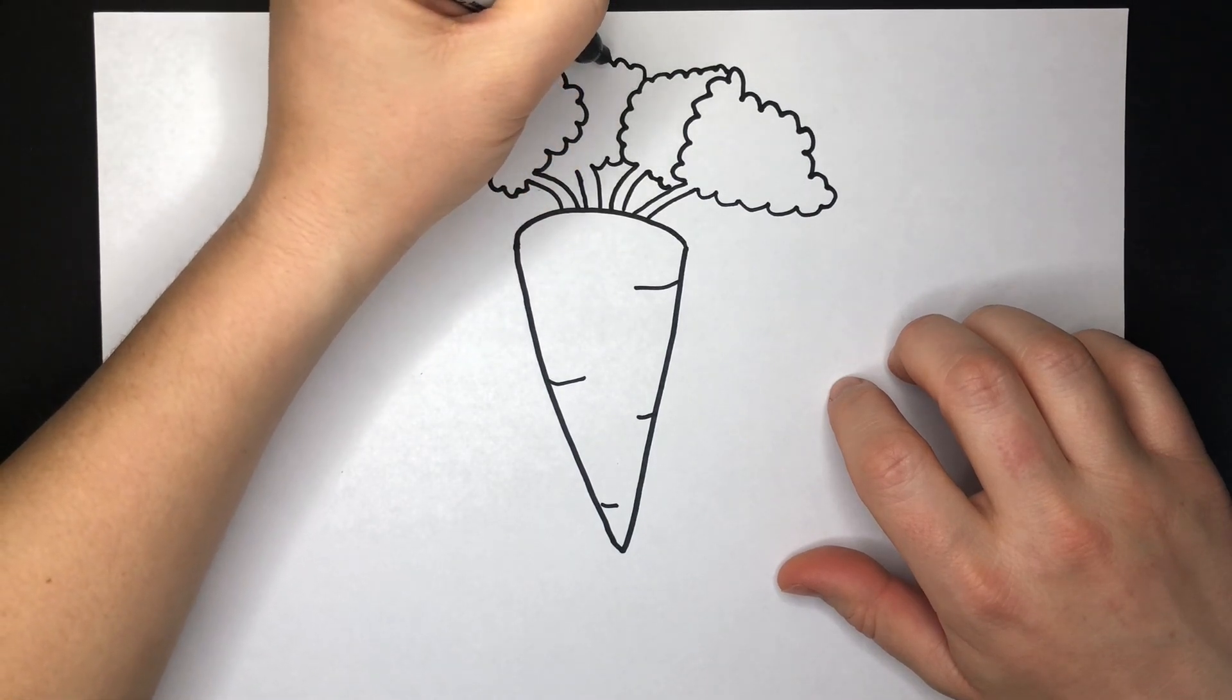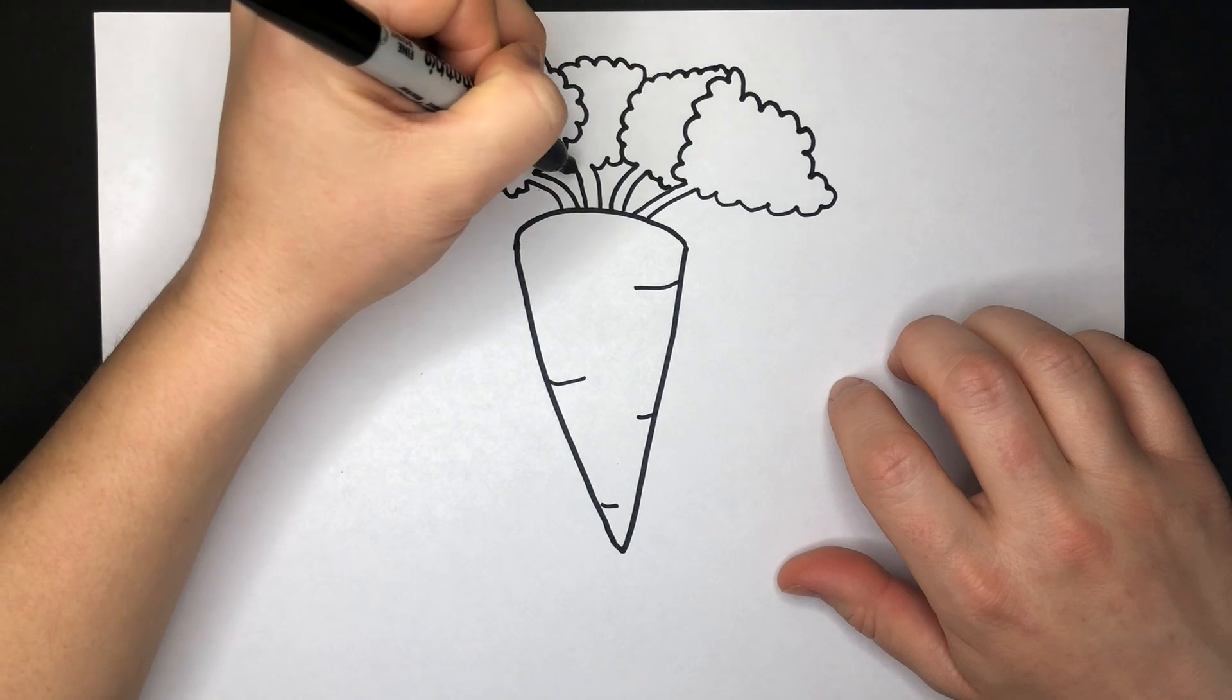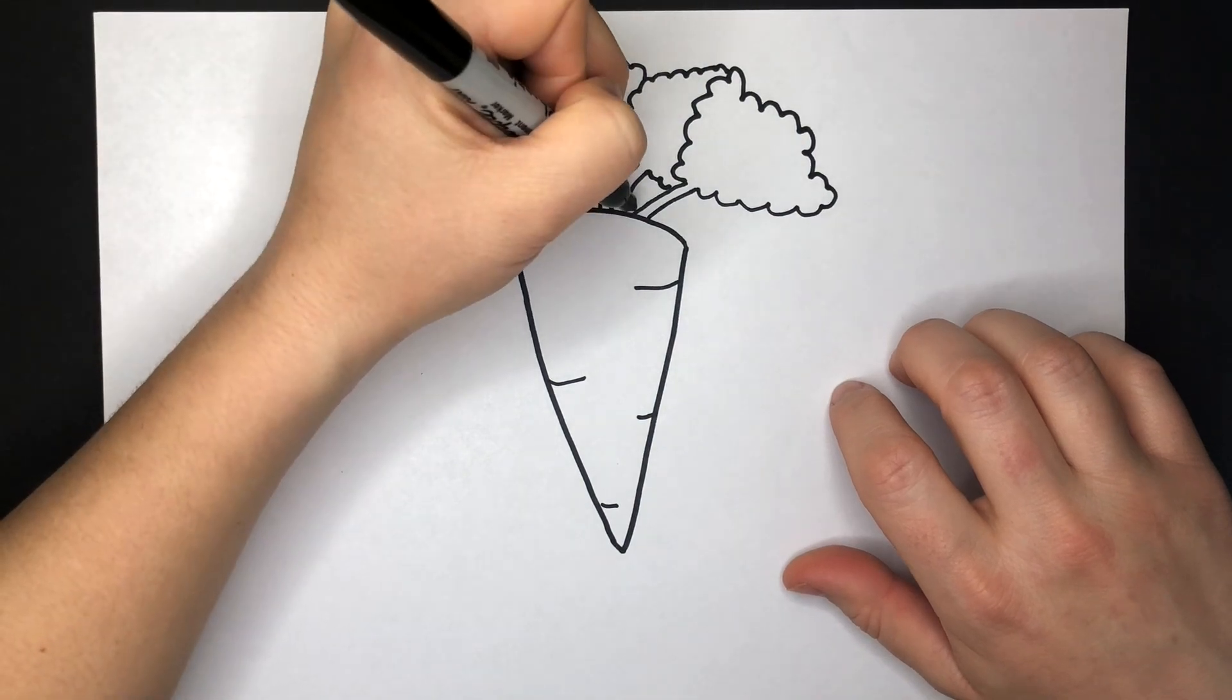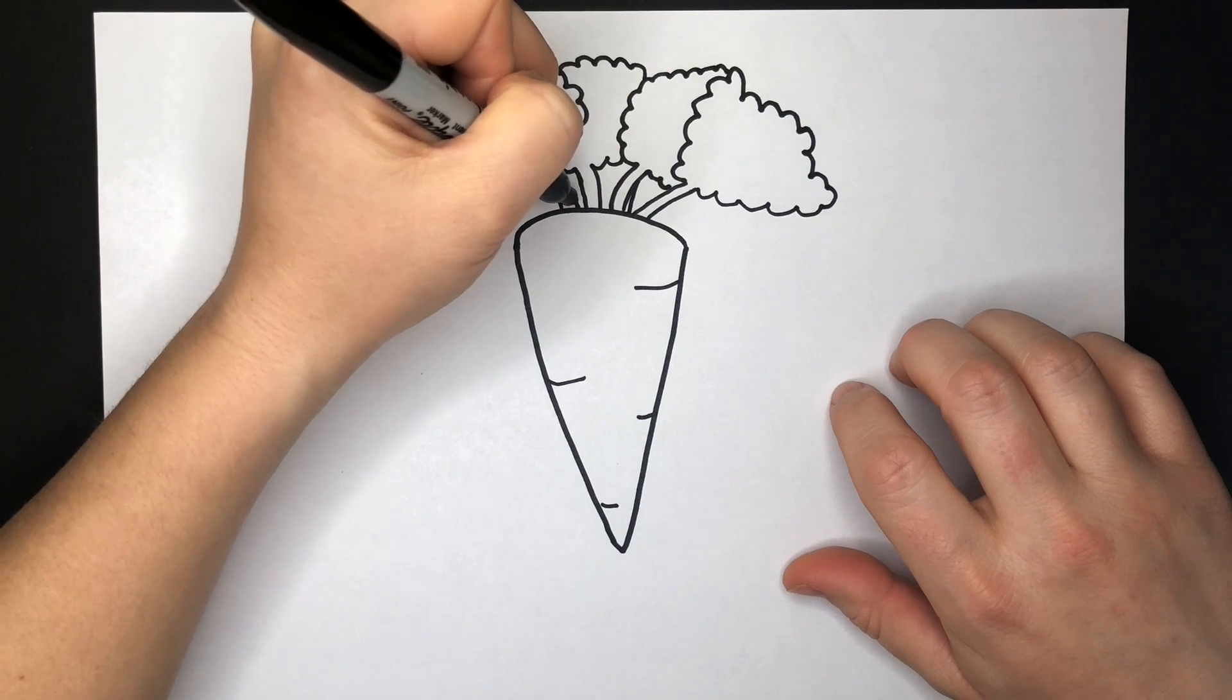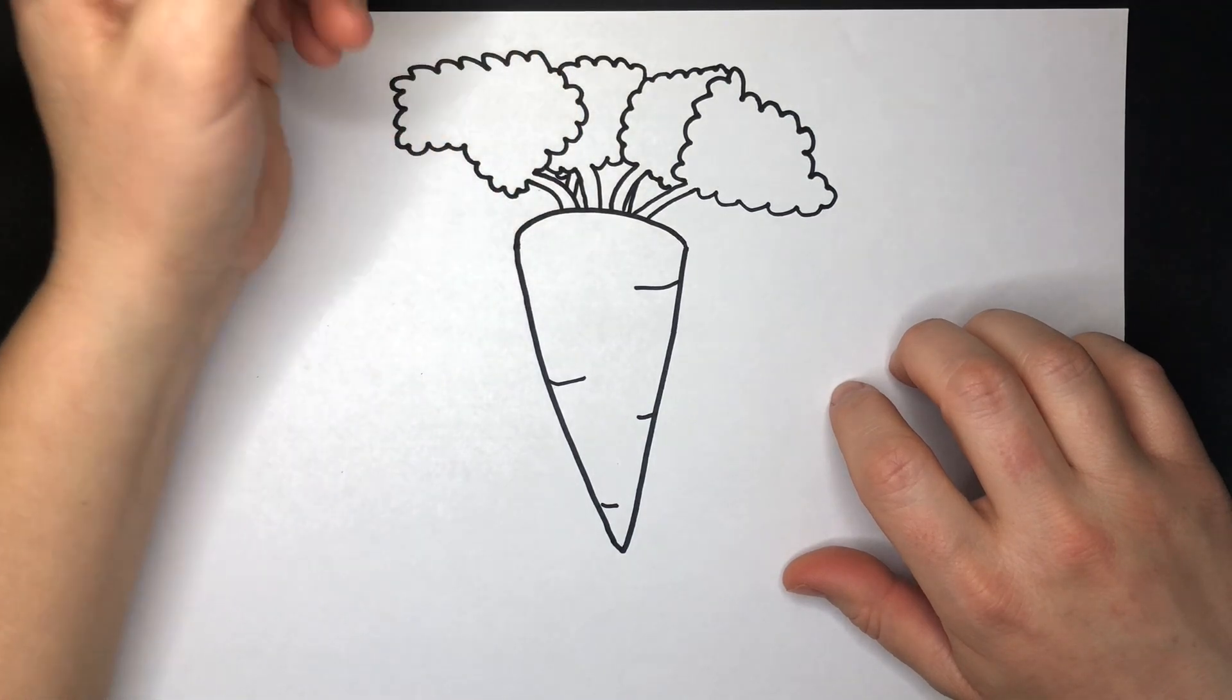Now I wanted my carrot to be quite bushy with lots of greenery on the top because often when I buy them that's how they look. But you can decide how bushy you would like your carrot. I like a bushy carrot.